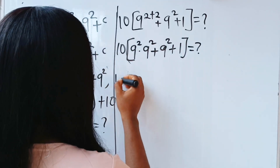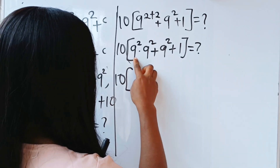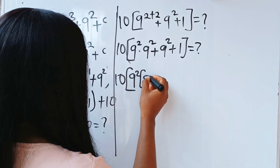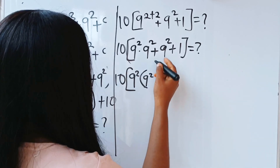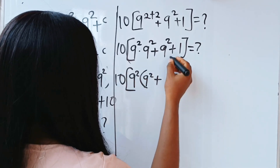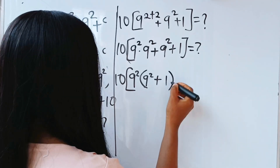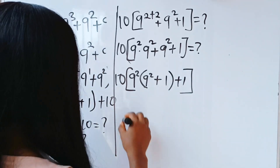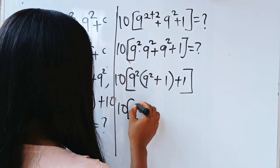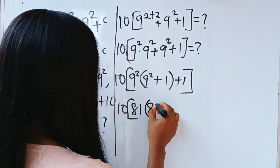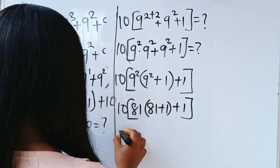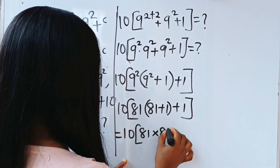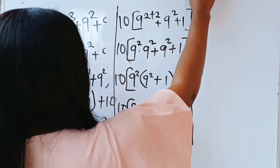So we have 10 brackets — we factorize 9 to the power of 2 out. When we do that we have 9 to the power of 2 remaining, plus 1 remaining. And we have plus 1. So we have 10 into: 9 squared is 81, and 81 plus 1 is 82, then plus 1. This equals 10 into 81 multiplied by 82, plus 1.